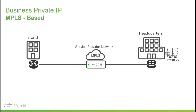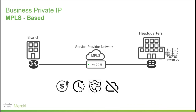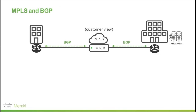Traditionally, headquarters and branches connect via MPLS circuits managed by the service provider. There are many challenges in this design. Some of those challenges are high cost compared to the offered bandwidth, it takes a long time to deploy, it is not very secure as data is transferred unencrypted, it is not public cloud friendly, and finally this design has limited geographical reachability based on the service provider network.